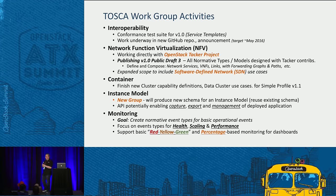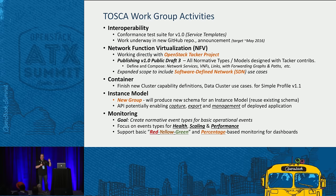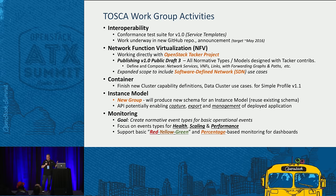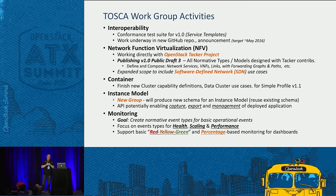Instance model: we have a working group on how to do management after deployment. The input is a template, but after it's been running — with policies, scaling, failover — you want to capture that state for management or introspection. We'll define an API for instance model manipulation. Monitoring: ongoing work with the monitoring working group will feed the clustering and policy stuff to trigger events, evaluate rules, and fire alarms. We're taking a high-level green/yellow/red approach, and you can derive your own granularities of events. It's a pluggable concept in TOSCA.